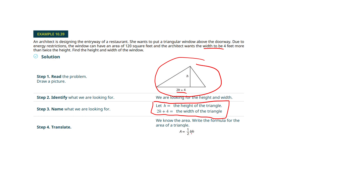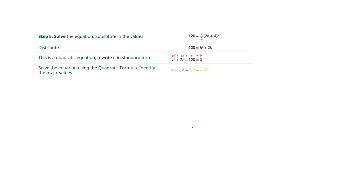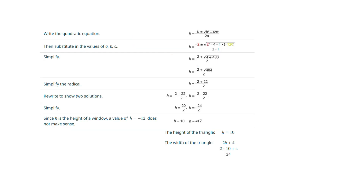Plugging in, we create this: area equals one-half the base times the height. Multiplying through, it tidies up. Setting it up for the quadratic, we solve using the quadratic formula and get two possibilities. Notice that one of the heights turns out to be a negative number — you can't have a negative height, so that is not acceptable and we drop it. We go with h being 10.